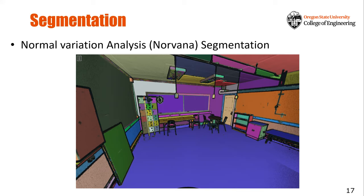My colleague Ezra Che is working on this segmentation approach where different objects are grouped and colored with different labels. For example, if you want to extract only the floor, clicking on one point will return the entire set of points constituting that floor. This is very useful for a variety of different modeling approaches — it groups points on the same surface, making it much easier to use the point cloud dataset for further applications.